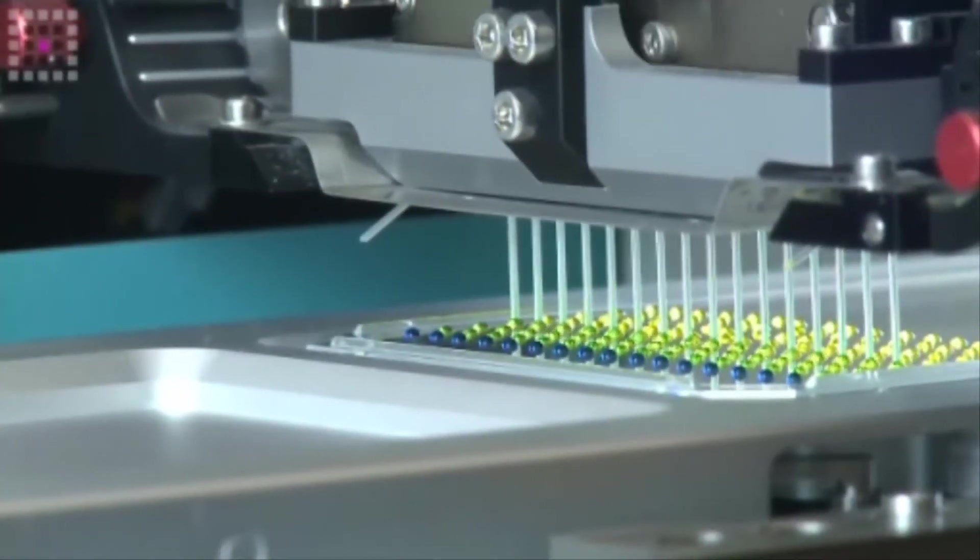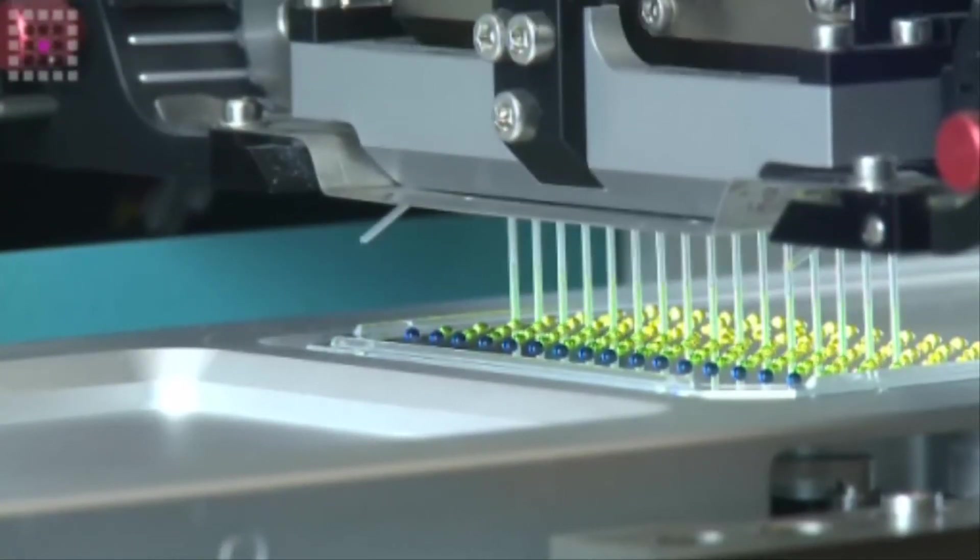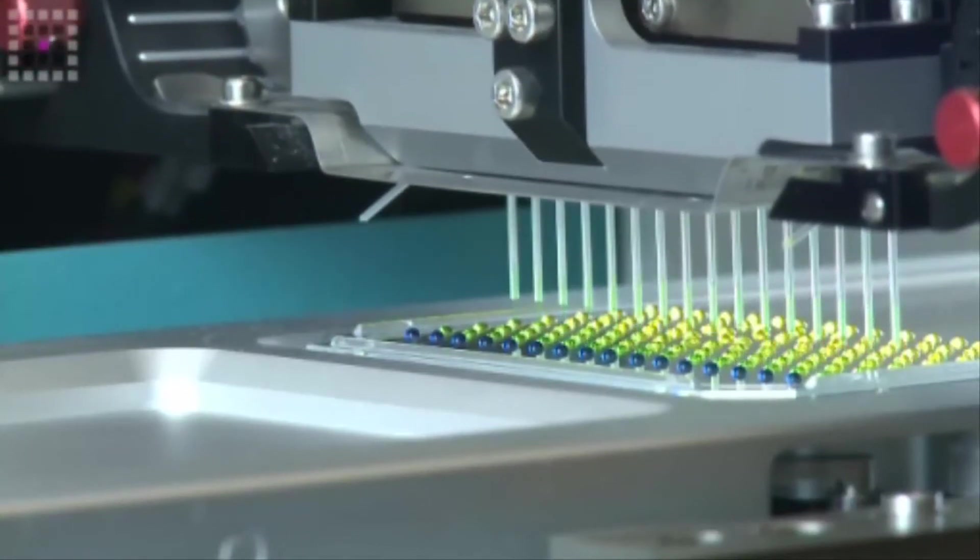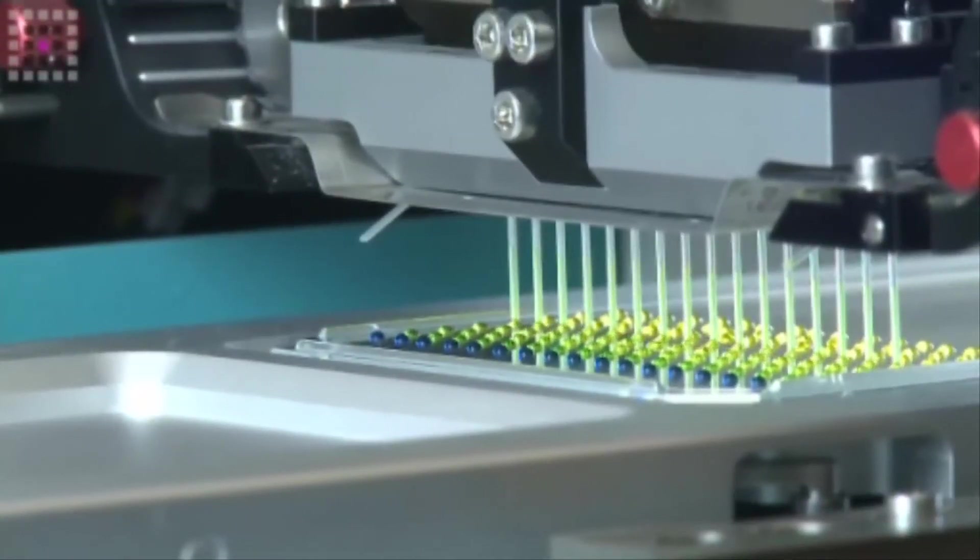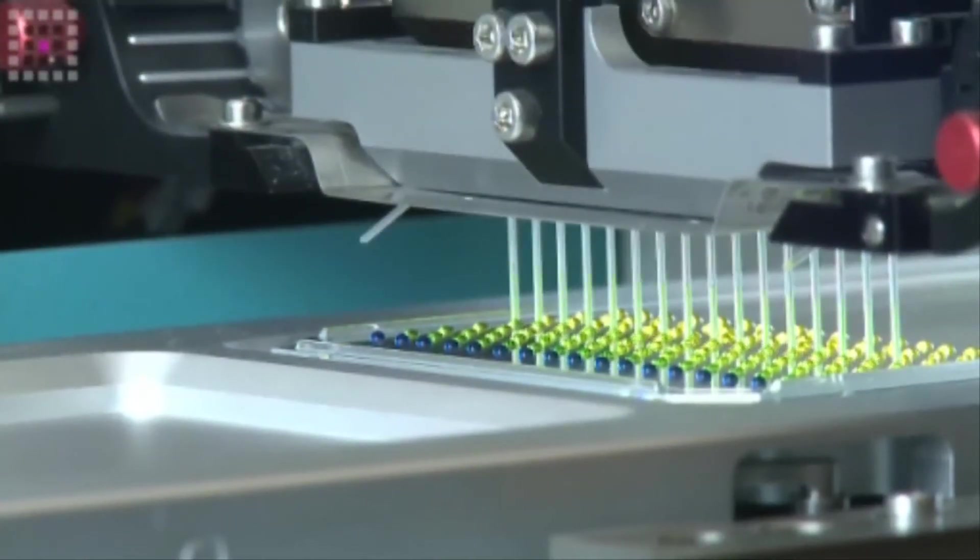Then we carry a third of that mixture into the next column and again mix at two different heights and two different speeds to ensure that there's homogeneous mixing of the compound into the diluent before we carry down to the next column. The number of mixes can also be varied in the software so we can ensure that we get extremely good mixing down the dilution series.